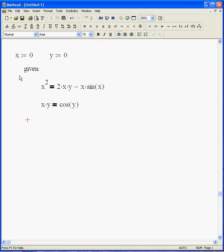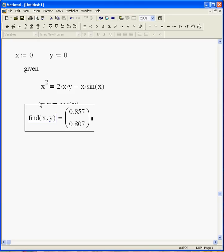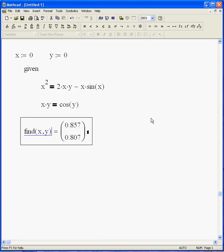So I've got an initial guess. I've opened the solve block with the word given. Put in some conditions that need to be met. Those two functions need to be satisfied. And the last thing I do is type in find X, Y. That says find me the X and the Y that satisfy those two equations. And there they are. Now I've got some overlap so let's move that down. So there you go. That's a solve block.